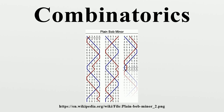The philosopher and astronomer Rabbi Abraham Ibn Ezra established the symmetry of binomial coefficients, while a closed formula was obtained later by the Talmudist and mathematician Levi Ben Gerson in 1321. The Arithmetical Triangle, a graphical diagram showing relationships among the binomial coefficients, was presented by mathematicians in treatises dating as far back as the 10th century, and would eventually become known as Pascal's Triangle.